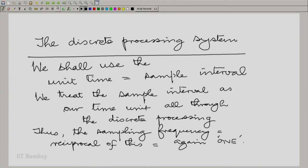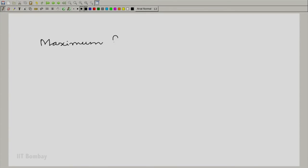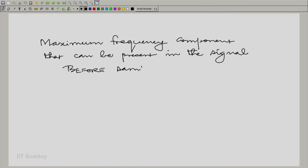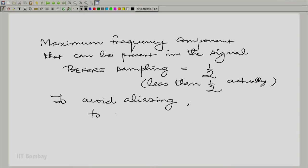Having agreed to this, the maximum frequency component that can be present in the signal before sampling is half now. In fact, it should be less than half to be very precise. Why do we want this? We want this to avoid aliasing, to obey the Nyquist principle. Otherwise, those aliases, the copies would start polluting the original spectrum.